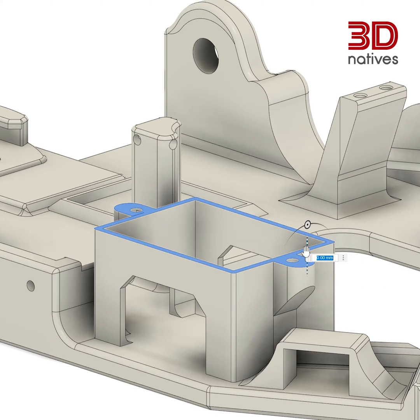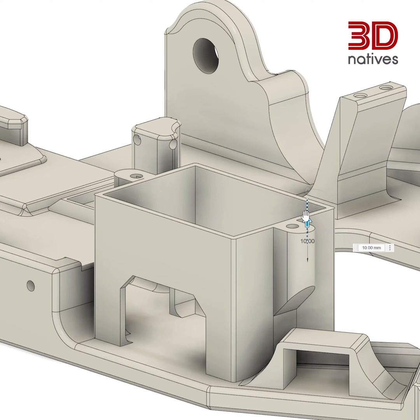Last but certainly not least, we have STEP, or Standard for the Exchange of Product Data. Developed in the early 90s by ISO, it's not made specifically for 3D printing, but plays a crucial role in CAD and engineering. This format is complex, storing not just geometry but also product structure, assembly, configuration, and metadata. It's like the Swiss Army knife of file formats — a neutral standard made to be cross-compatible. However, it's not optimized for 3D printing and may contain unnecessary data, making it less user-friendly. You'll need specialized software to navigate this one, and some specific CAD programs and slicers will charge a fee or subscription to allow for the use of STEP files.